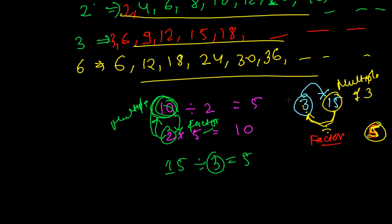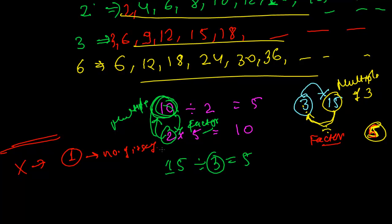One more thing: the multiples of any number are at least 1 — which is the number itself. Every number has at least one multiple, which is the number itself. So for 2, 3, 4, or 6 — every number has at least one multiple, which is the number itself.